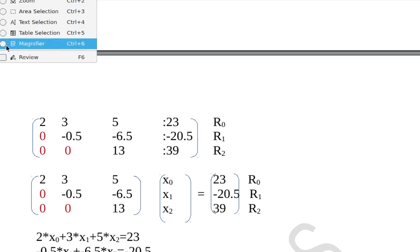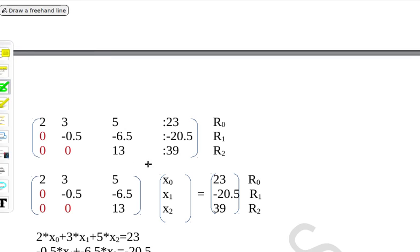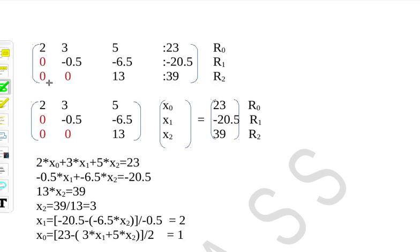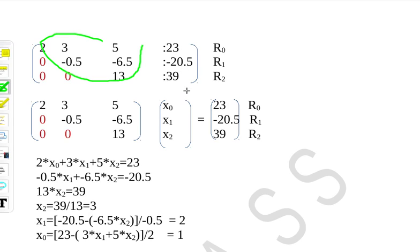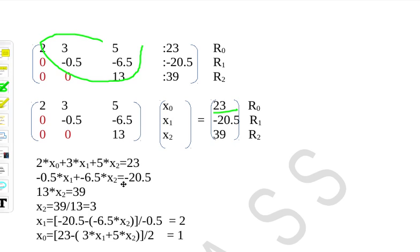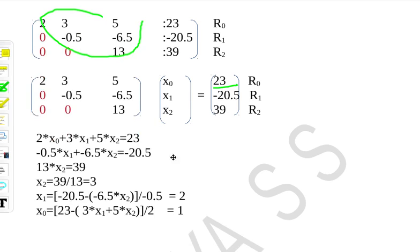Now the matrix is in upper triangular form. We can rewrite it as the equation system: 2x0 + 3x1 + 5x2 = 23, −0.5x1 − 6.5x2 = −20.5, and 13x2 = 39. Now we move on to back substitution.